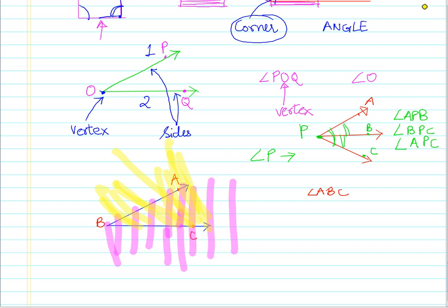So, now, if you see very closely here, what exactly is happening, you will see that there is a portion common to these two rays A, B and B, C, where both of these colors are kind of superimposing on each other. So, this part, we call it as the interior of the angle. Interior of angle A, B, C.